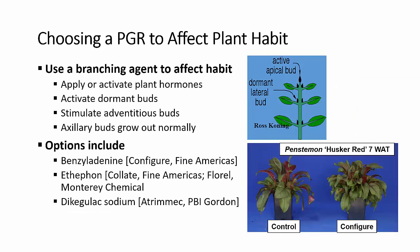If we want to affect plant habit, then we're going to use a branching agent, and these will either apply or activate plant hormones in the plant. Our goal is to activate dormant buds or to stimulate adventitious buds, but it's important that those buds grow out normally in order to give us an improved plant. Some of those options are benzyl adenine, ethephon, or dikegulac sodium.